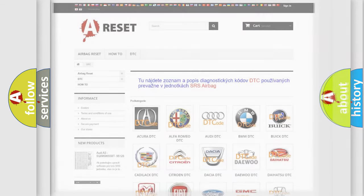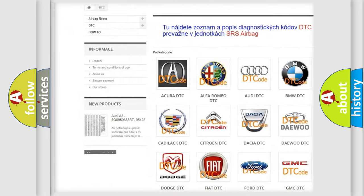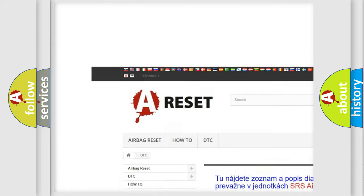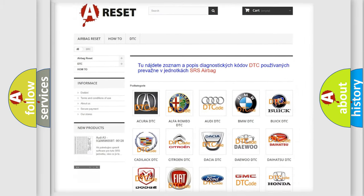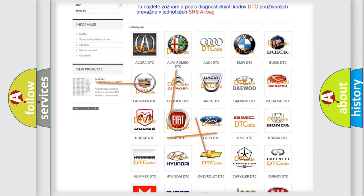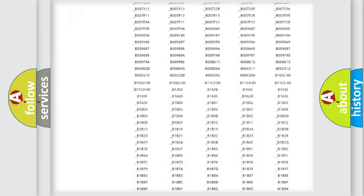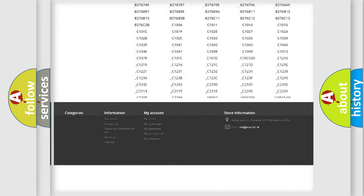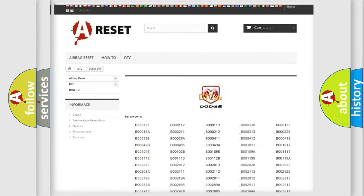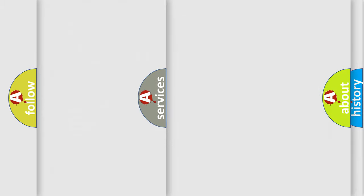Our website airbagreset.sk produces useful videos for you. You do not have to go through the OBD2 protocol anymore to know how to troubleshoot any car breakdown. You will find all the diagnostic codes that can be diagnosed in Dodge vehicles, and many other useful things.